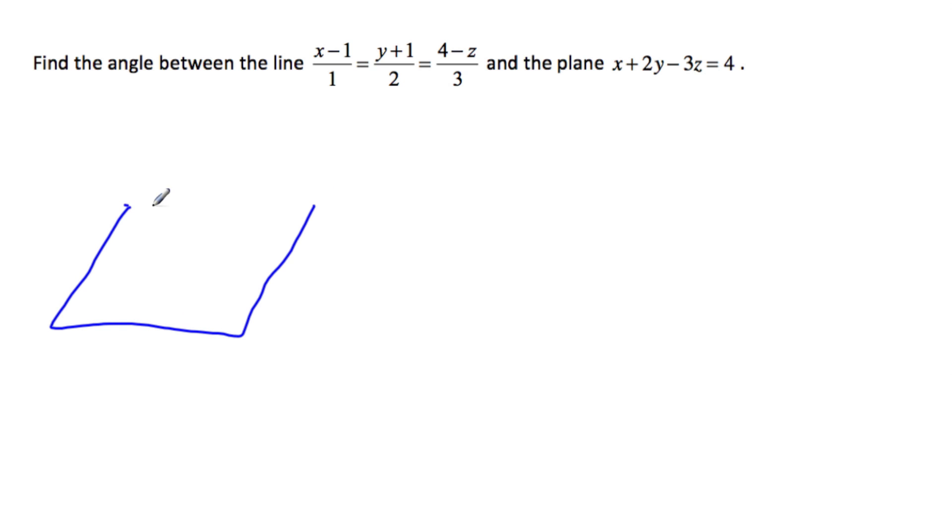So here's our plane, and then we have a line that goes right through the plane, like this. And we are asked to find this acute angle right here between the line and the plane. So if I draw a normal to the plane, normal meaning it's perpendicular to the plane, so it's 90 degrees.